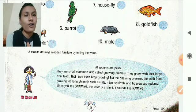Mr. Know All: All rodents are pests. They are small mammals also called gnawing animals. They gnaw with their large front teeth. Their front teeth keep growing, but the gnawing prevents the teeth from growing too long. Animals such as rats, mice, squirrels, and beavers are rodents.